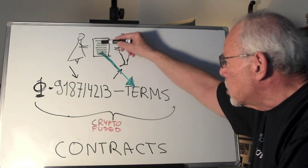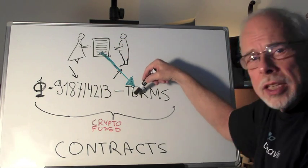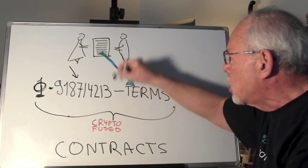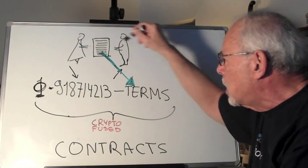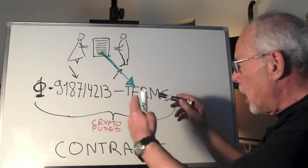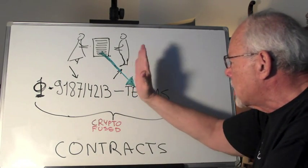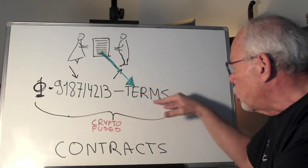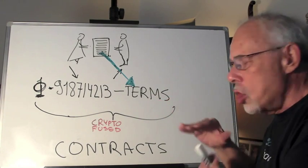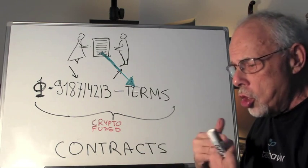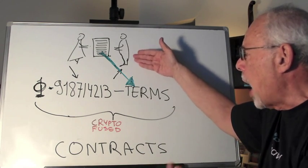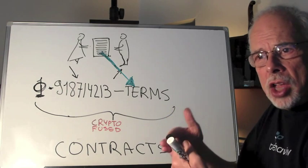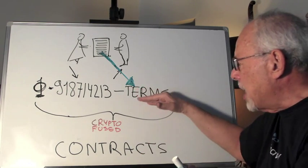Here's the BitMint way. The contract terms — all the terms — are translated to computer language and cryptofused to the digital claim check that represents the money Alice gives to Bob. It's cryptofused, so Bob cannot sever it and say 'I take the money and run.' He cannot. The money is only good for the terms specified. No need to follow up, no need to chase in court, because Bob cannot abuse what he could abuse before when cash was untethered to terms.